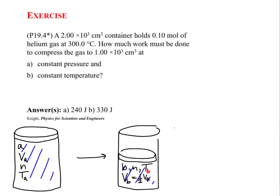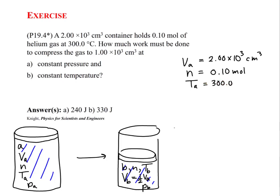We also have one additional thermodynamic state variable: pressure. So we have pressure at point B, and I'll go back and label pressure at point A for state A. The thermodynamic state variables we have are: volume in state A, which is 2000 cubic centimeters; the number of moles, which remains constant; the temperature in state A, which is 300 degrees Celsius — we'll need to convert that to Kelvin later; and pressure at point A, which is unknown.